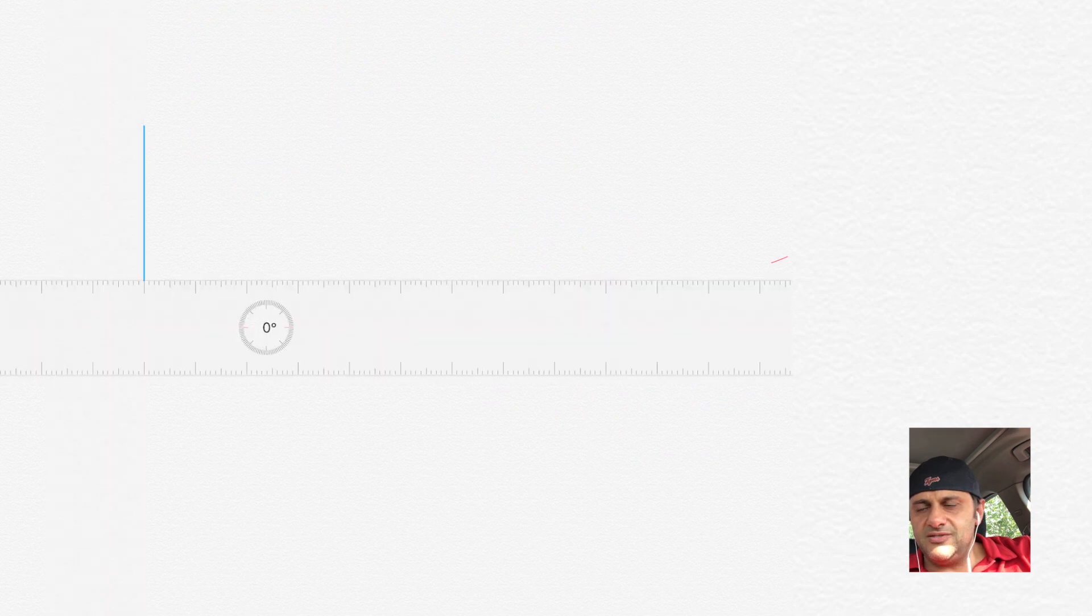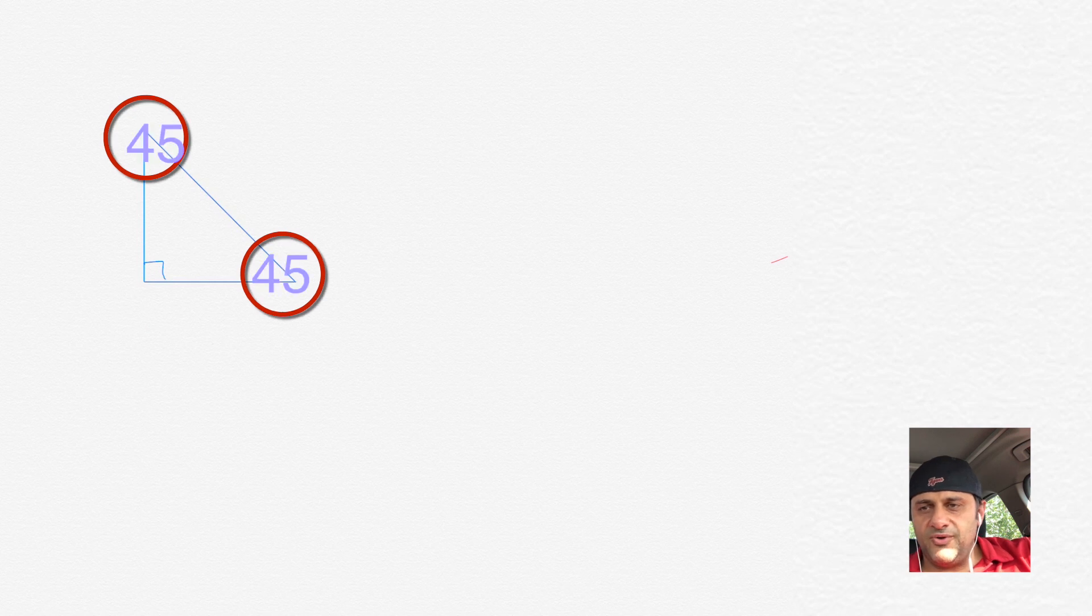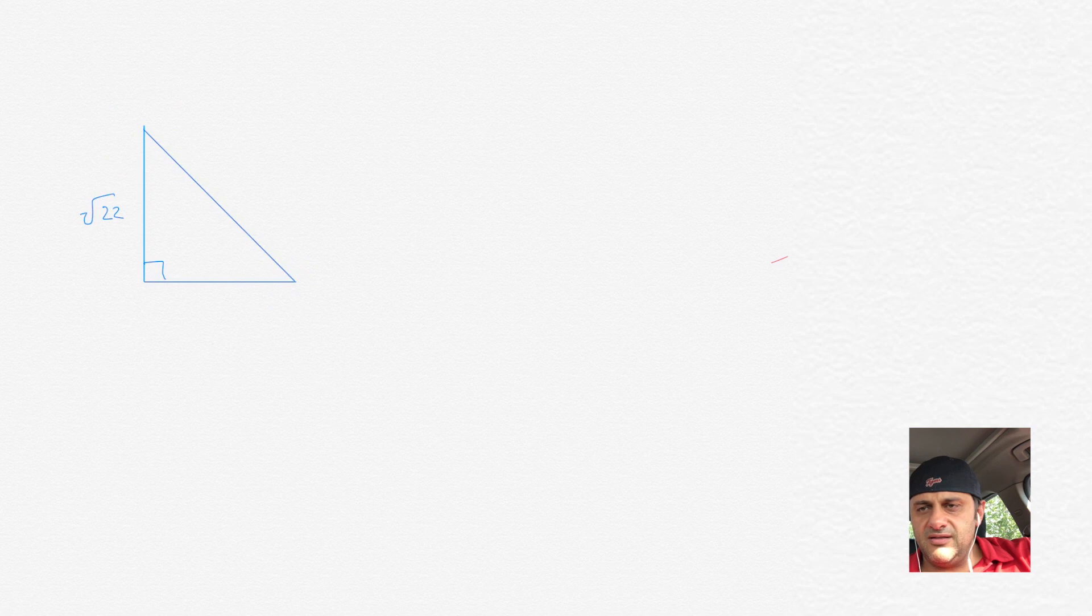Now, let's try a right triangle. In a right triangle, there's a good opportunity to go over a couple principles. If you have a right triangle where the two sides are equal, and then there's a hypotenuse. Well, for one, we have what's called a 90, 45, 45. Both those angles are going to be 45 degrees. And then we have, let's say, each side is the square root of 22.